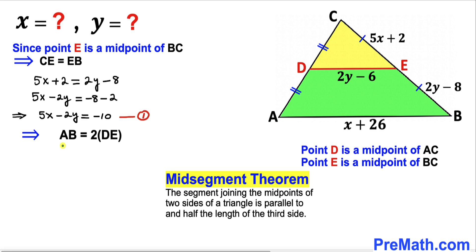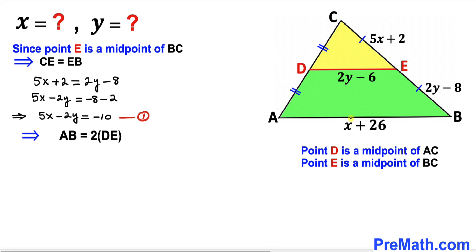In other words, line segment AB equals 2 times line segment DE, which is 2y minus 6.